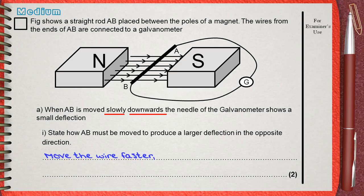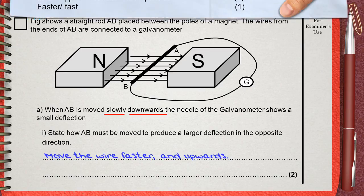To get the deflection in the opposite direction, we must move the wire upwards instead of downwards. Now we get a larger deflection in the opposite direction.